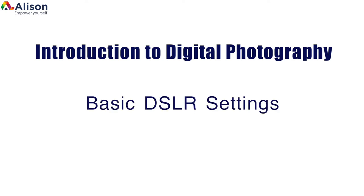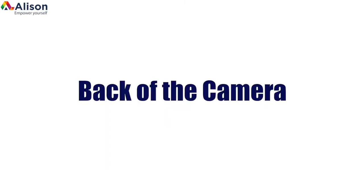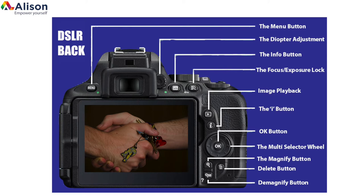Introduction to digital photography — basic DSLR settings. When we move to the back of the camera, we will find it much easier to figure out what we are looking at, due to the fact that many of the names are self-explanatory. When I first began photography, that was the first thing that surprised me. These functions are typically used for menu navigation and playback.